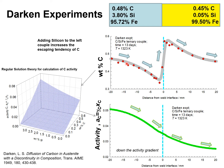If we re-plot the experimental data in terms of the activity against the distance from the weld interface, we note that the activity progresses monotonously from a high activity region to a low activity region and does not show any minimum or maximum. In other words, the experience of uphill diffusion is not observed when we use activity gradients as driving forces for transfer of carbon from one compartment to the other.